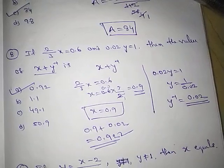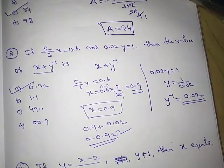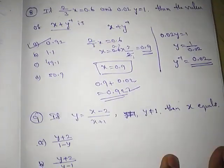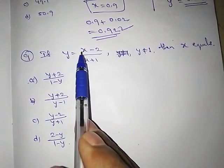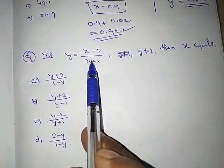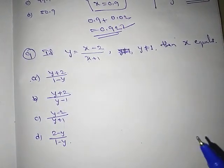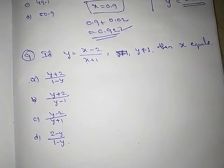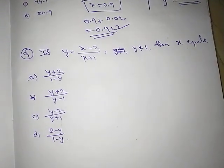To increase your thinking capacity, do problems regularly without hesitation or laziness. Here is a homework problem: if y = (x - 2)/(x + 1) and y ≠ 1, then x equals? Solve and comment your answer — options A, B, C, or D. Thank you for watching. Subscribe to my channel for more free videos in upcoming days.